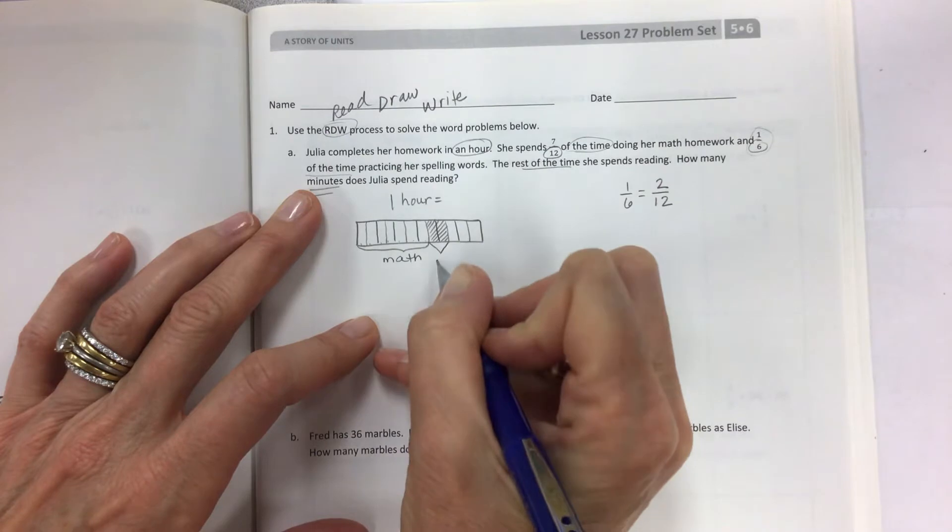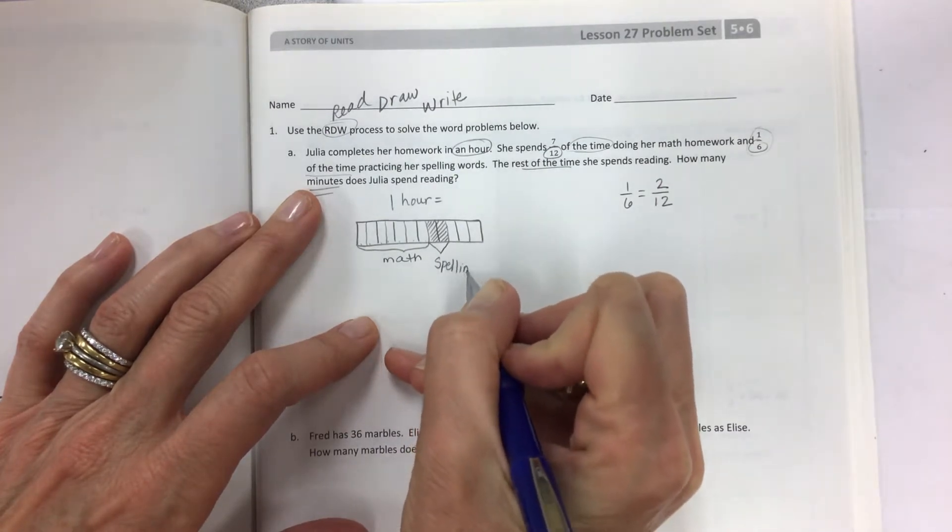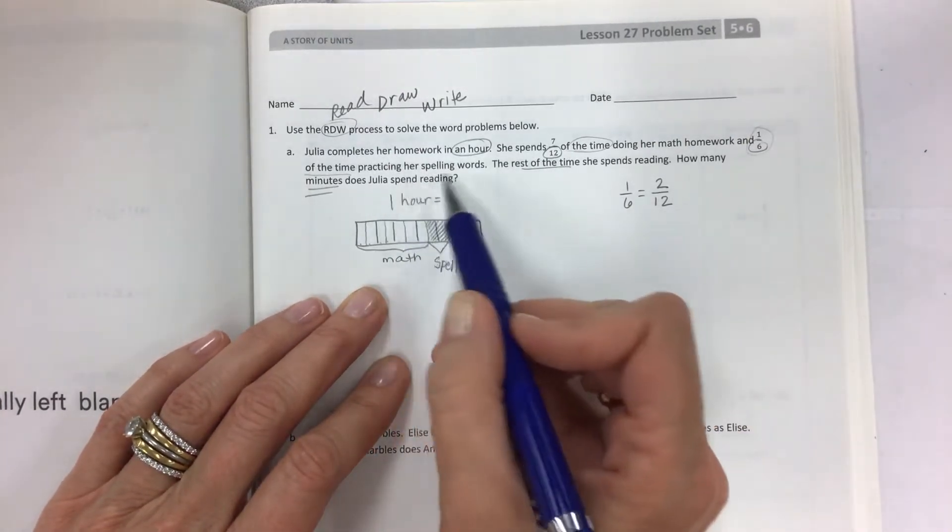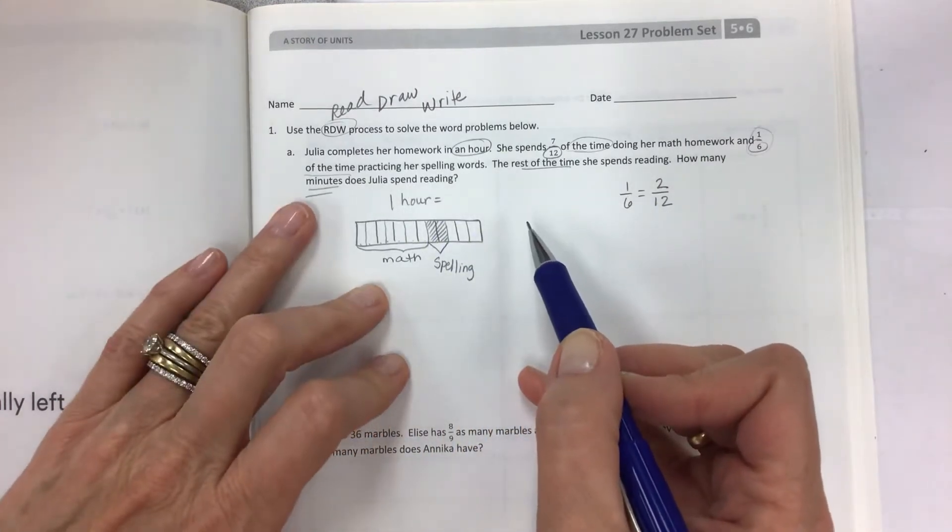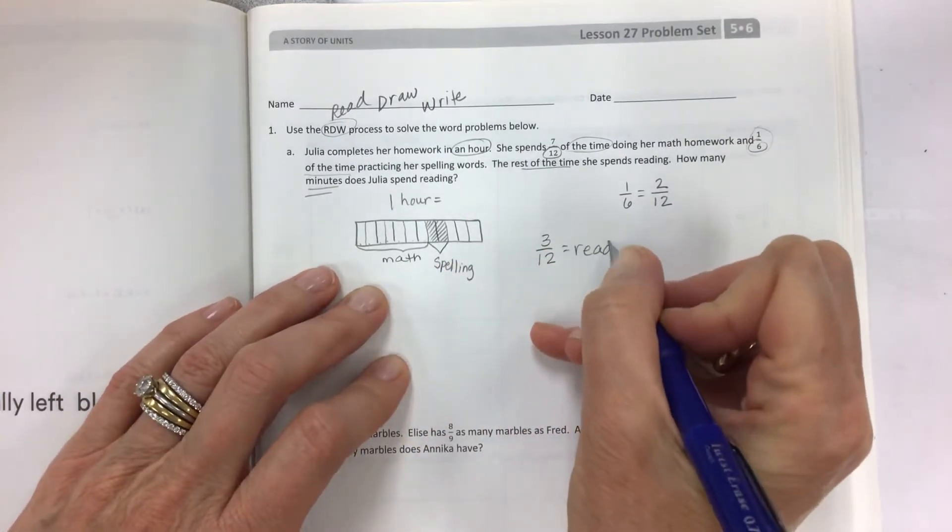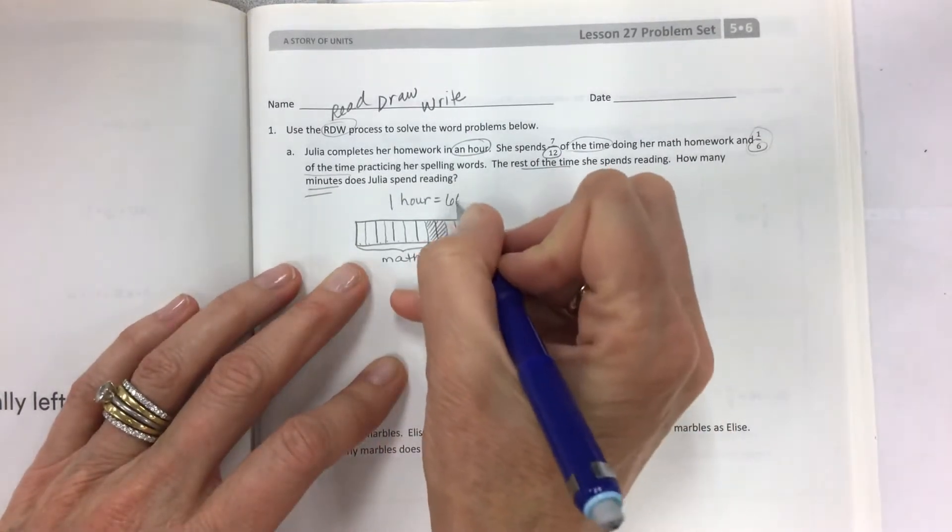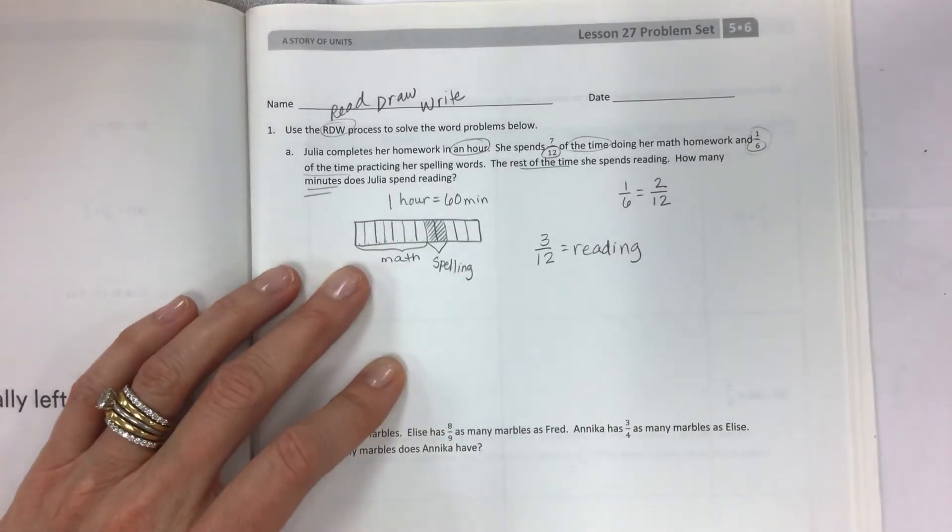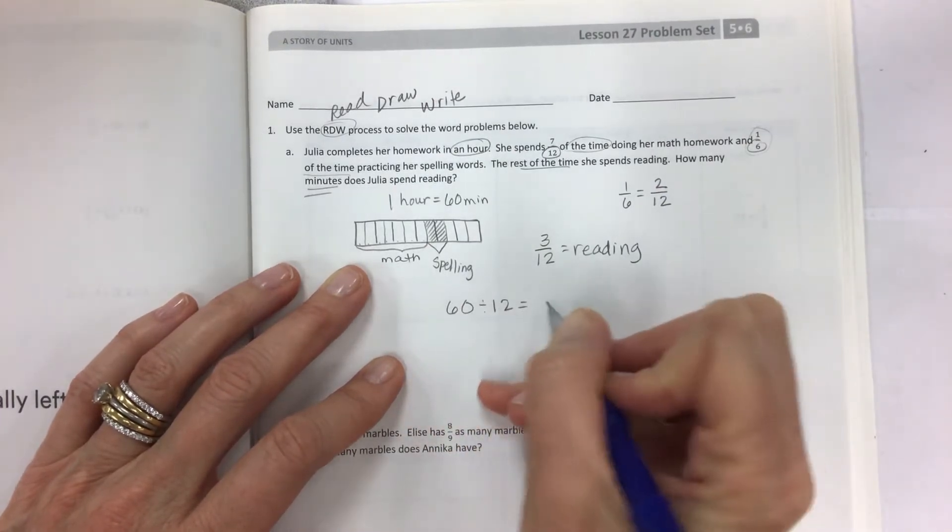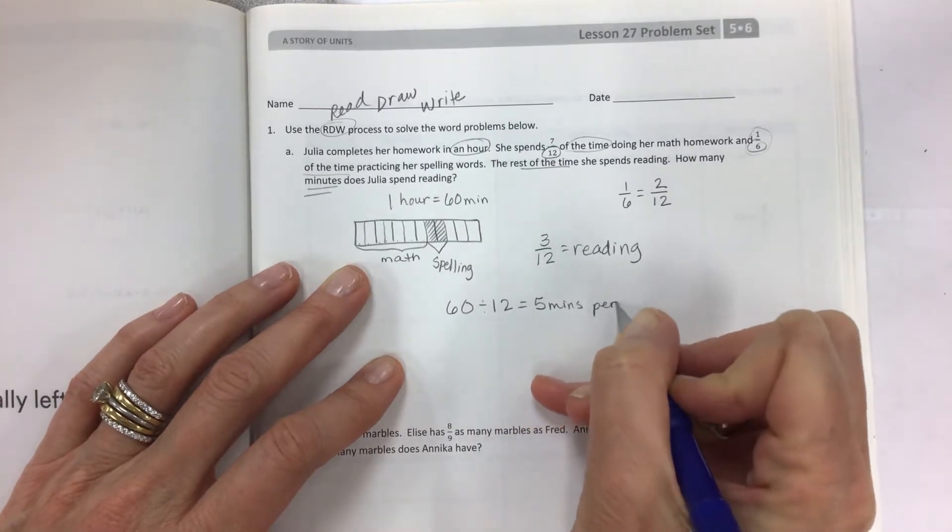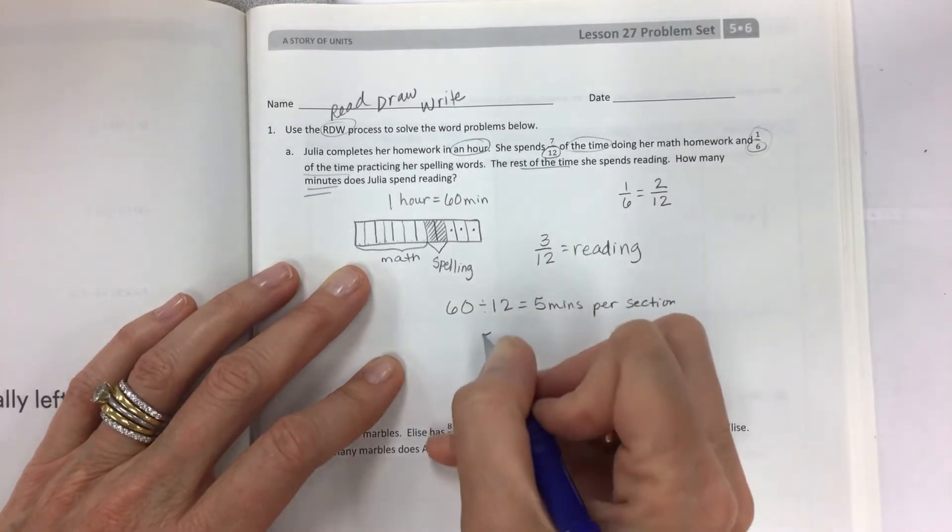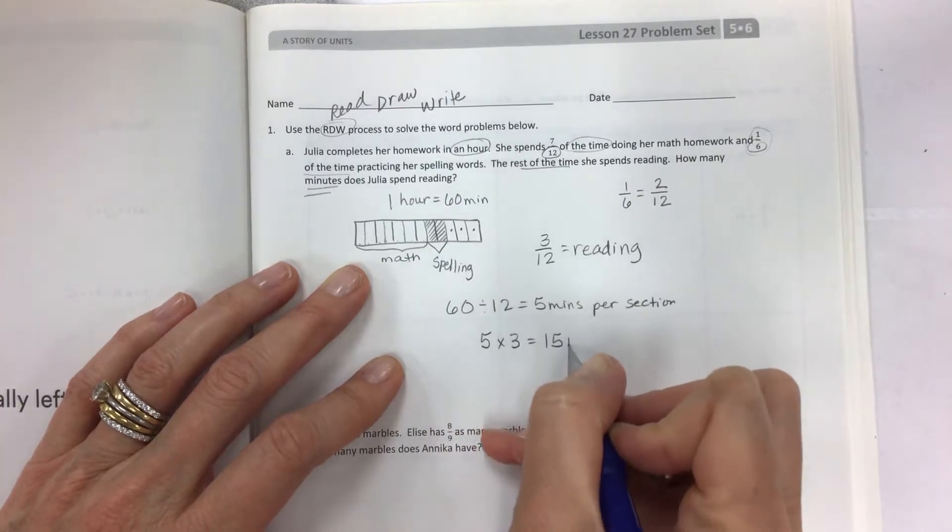The rest of the time she spends reading. How many minutes does she spend reading? So this is the three twelfths of the hour reading. But we know that if we take this hour and we call it 60 minutes, that's our equivalent. We can take the 60 and divide it by 12 and we get five minutes per section. And now we have one, two, three, and that would be 15 minutes reading.